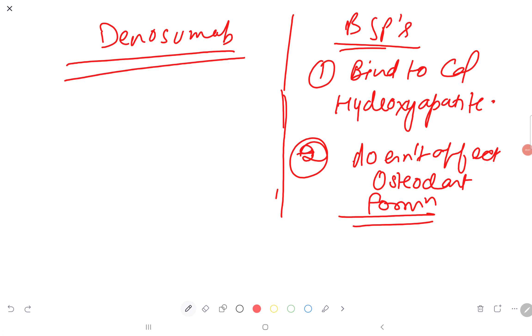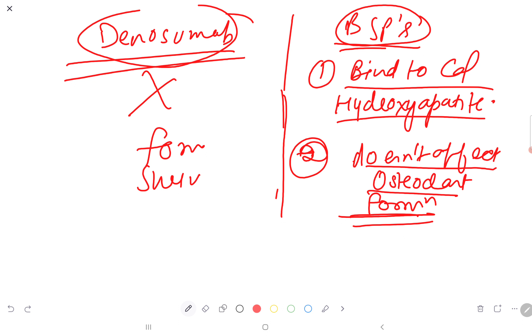Differences between denosumab and bisphosphonates: bisphosphonates bind to calcium hydroxyapatite, but denosumab doesn't. Bisphosphonates have a PCP backbone and affect only osteoclast survival and function, not formation. Denosumab affects osteoclast formation, survival, and function.